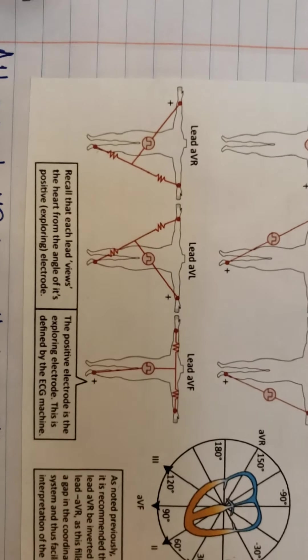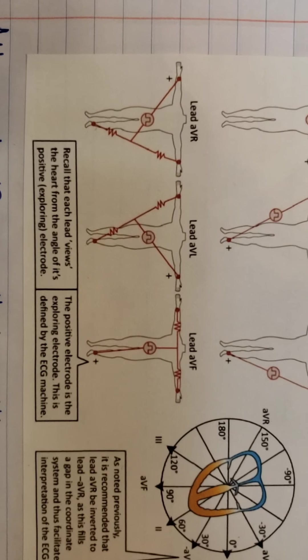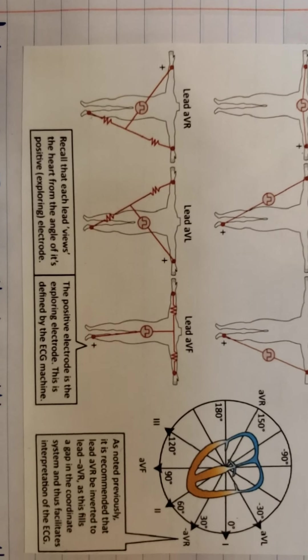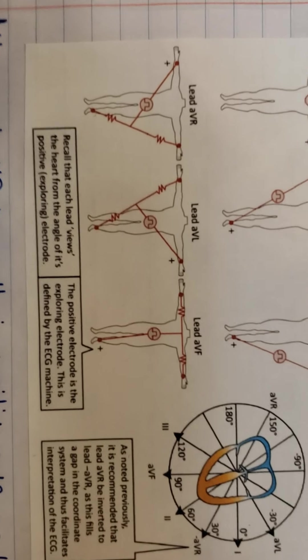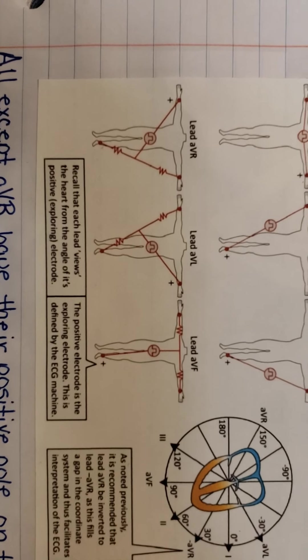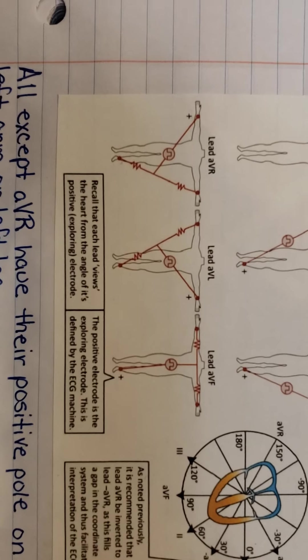Whereas AVL, we're going toward the positive lead. So, therefore, our QRS will be positive. And the same thing with AVF. We're going toward the positive lead. So, therefore, our QRS will be positive.